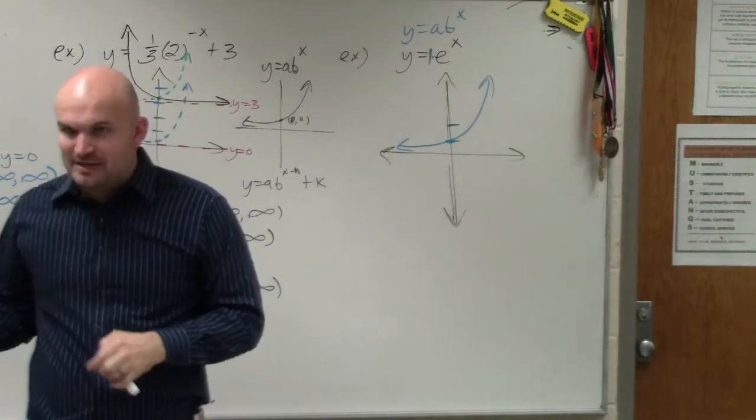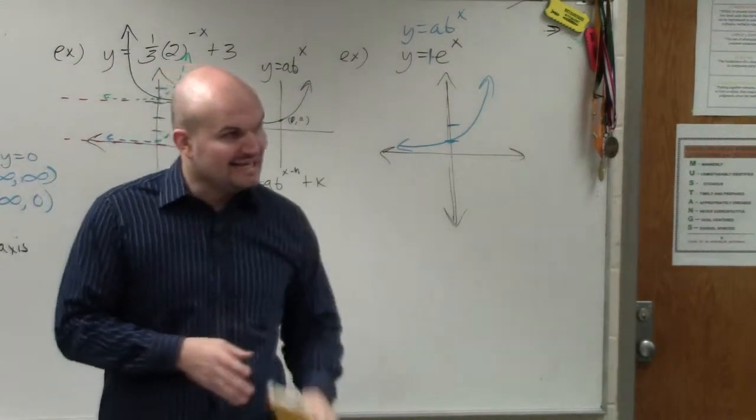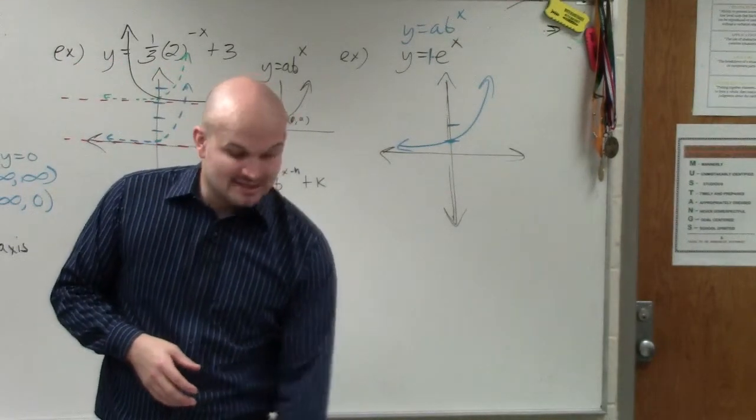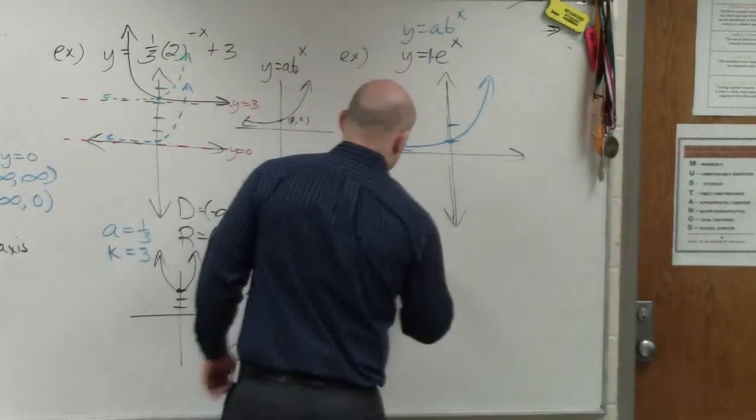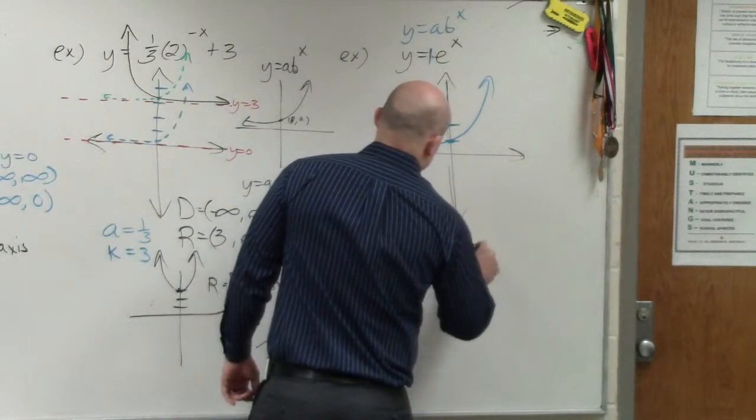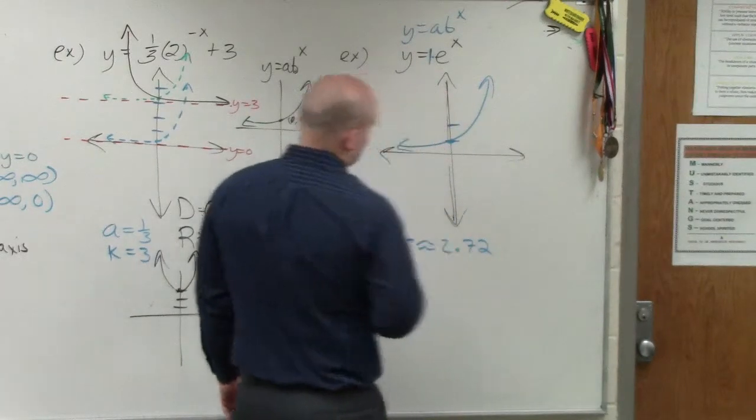Now, if you guys want to type in e, when you guys, if your calculator, e is actually a constant. It is not a variable. E is going to represent approximately 2.72, OK?